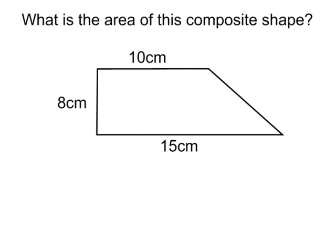How do you find the area of composite shapes? Composite shapes are made up of many different polygons. This shape is actually a trapezoid, but I'm going to break it into two different shapes. We'll start with the rectangle — its length is 10 and the height is 8, so we multiply 8 times 10, giving us 80 square centimeters for the rectangle. Now how do we find the area of the triangle portion?